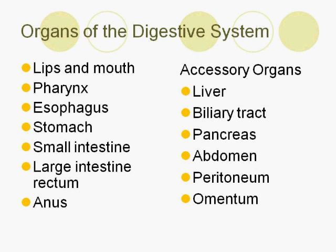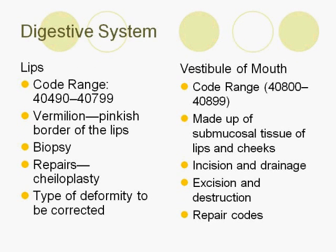Some of these organs aid in producing enzymes that help to break down nutrients. Procedures on the lips can include biopsy and repairs. Repairs are divided by the type of deformity corrected. The vestibule of the mouth, which is made up of some mucosal tissue of the lips and cheeks, can include procedures such as incision and drainage, excision and destruction, and repair codes.